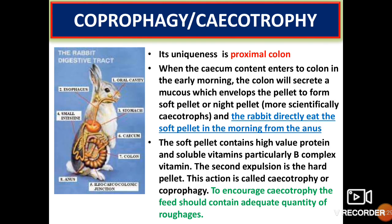An important process is cecotrophy or coprophagy. Digestion in rabbits is a typical one; the functioning of the rabbit's digestive tract is virtually the same as other monogastric animals, but its uniqueness is the dual function of the proximal colon. When cecum contents enter the colon in the early morning, the colon secretes mucus which envelops the pellet to form a soft pellet or night pellet, scientifically called cecotropes. The rabbit directly eats the soft pellet from the anus in the morning. This soft pellet contains high-value proteins and soluble vitamins, particularly B-complex. The second expulsion is a hard pellet. To enable cecotrophy, the feed should contain adequate roughages.